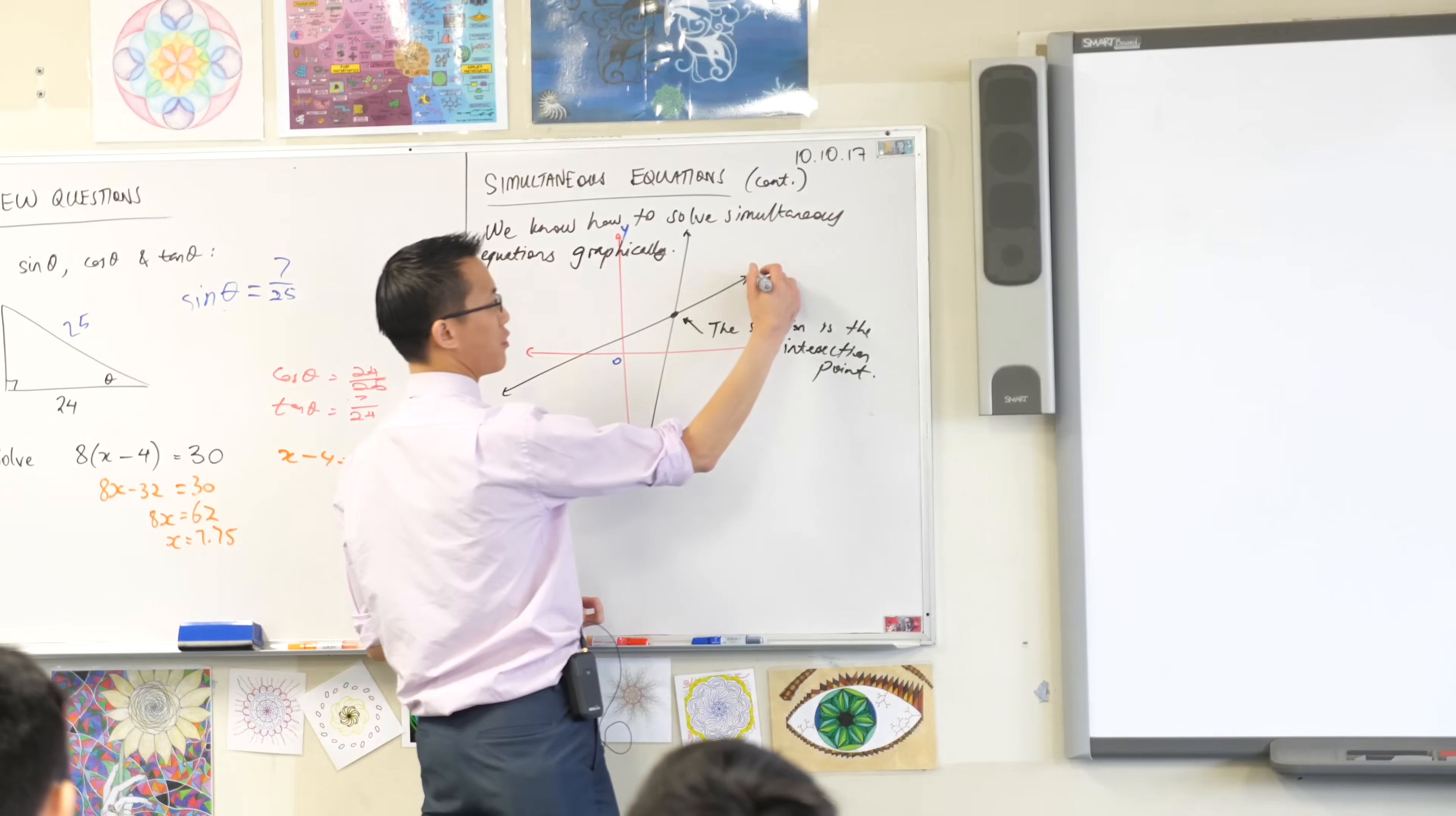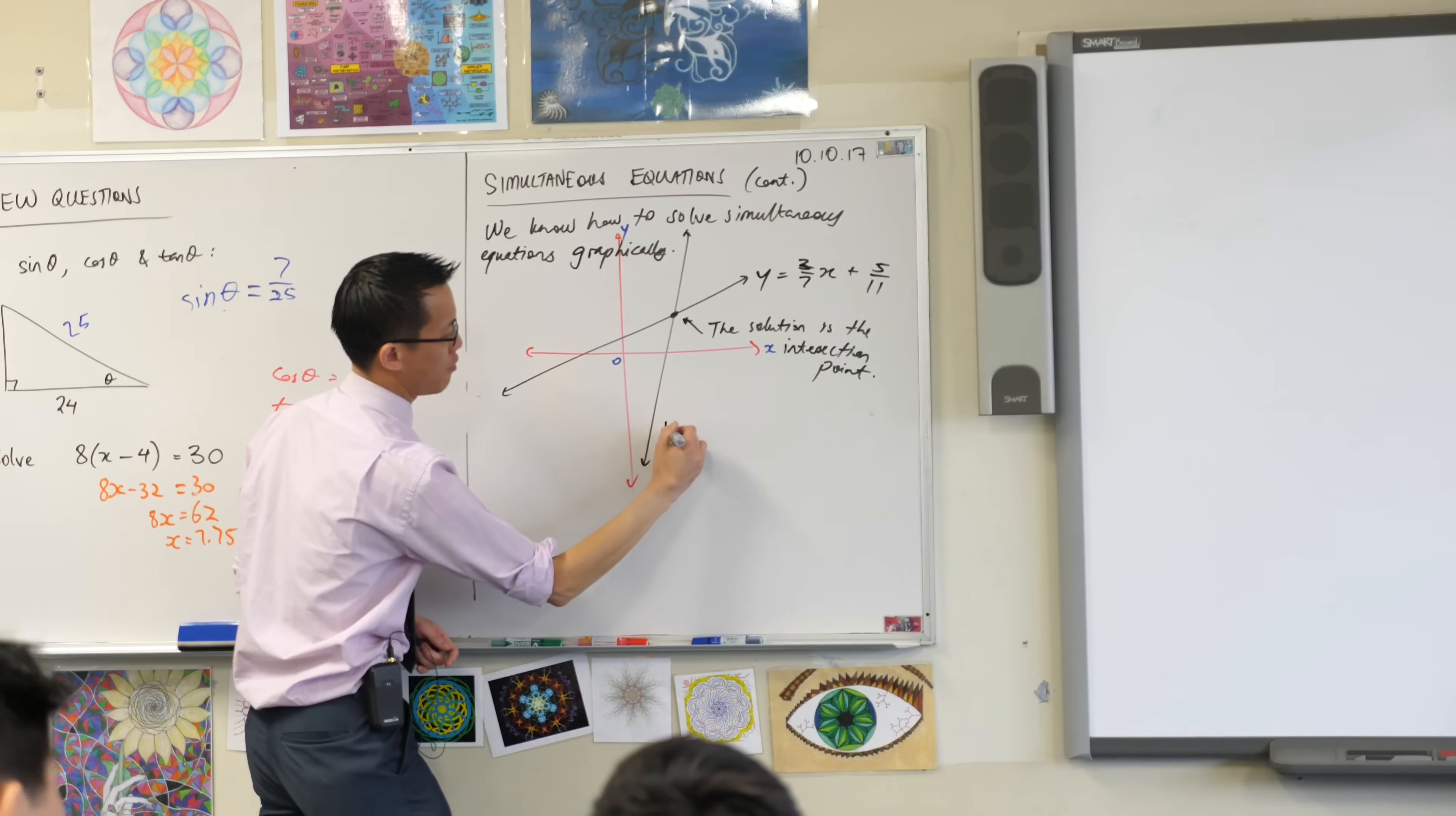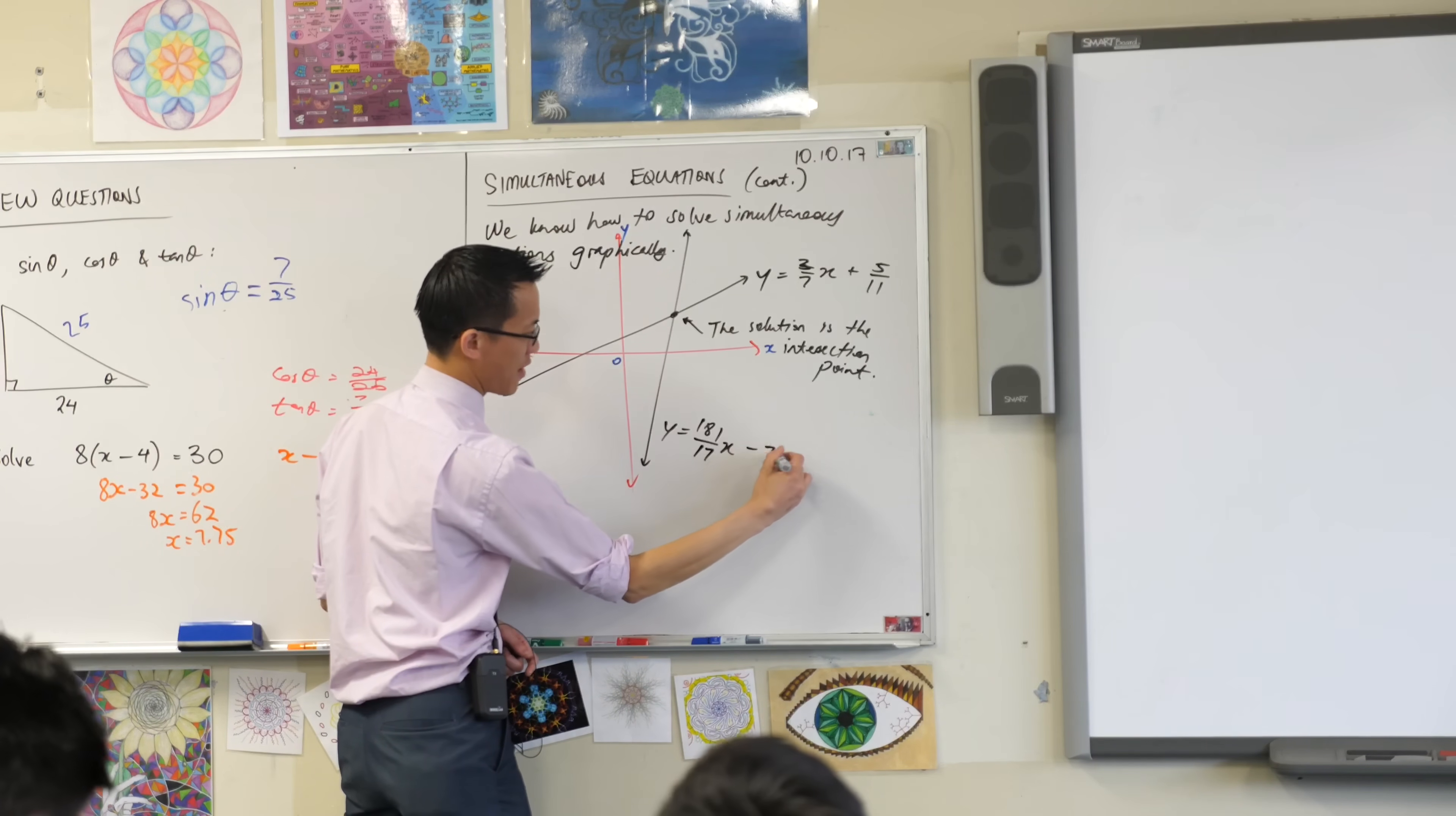But I can very easily come up with equations that make this impossible. For example, let's call this guy, I don't know, y equals 2, let's make it 3 sevenths x plus 5 over 11 and what might this be? I don't know, maybe 181 over 17 x minus 79.